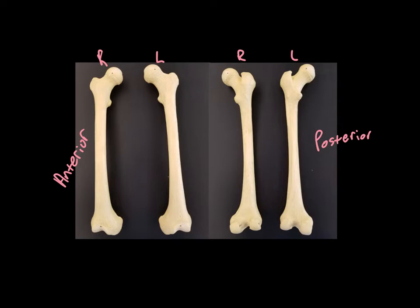Down at the opposite end we have a couple of things that we need to know. This smooth area right here on the anterior side, this is called the patellar surface and that's where your patella or kneecap rests.